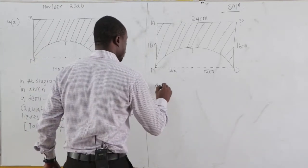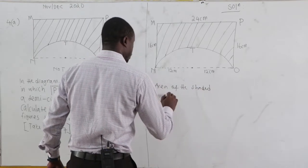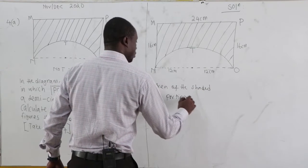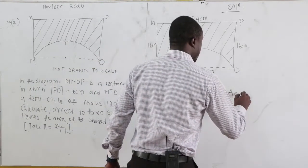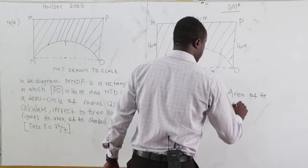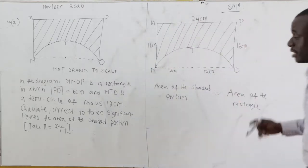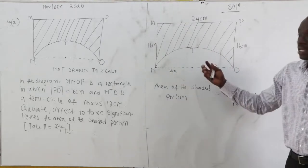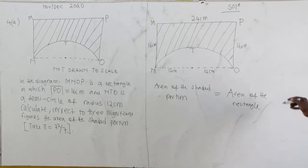The area of the shaded portion is equal to the area of the whole rectangle. And then when you take the semicircle from the rectangle, what is left is the area of the shaded portion. So area of the rectangle minus area of the semicircle.